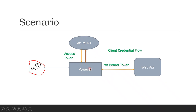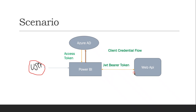Power BI is a reporting tool where we can connect with different kinds of data sources like SQL, cube, Excel, or any web API, fetch the data, and represent it through the tool. So let's assume there is a scenario where we need to connect with a web API to get the data. The challenge is that all web APIs are secured — they are not open-ended.